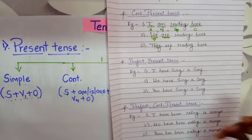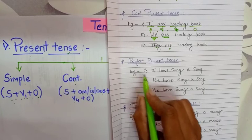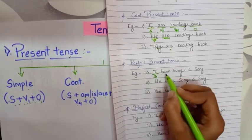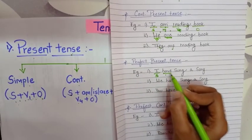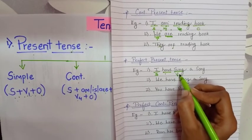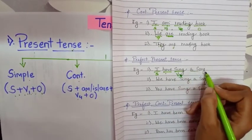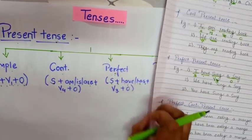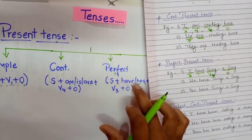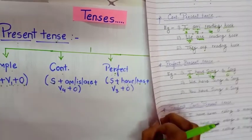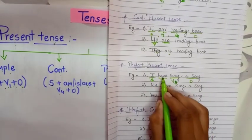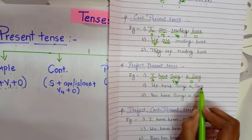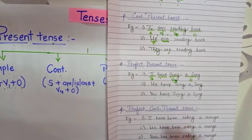Now let's move to perfect present tense examples. I have sung a song — S is I, have is the helping verb, sung is the V3 form of sing, and a song is the object, fitting S plus have plus V3 plus object. Further examples: We have sung a song. You have sung a song.